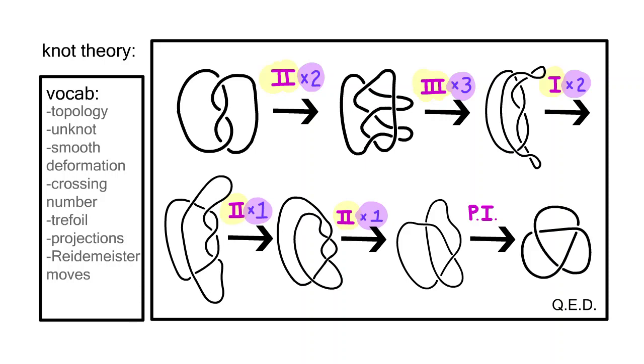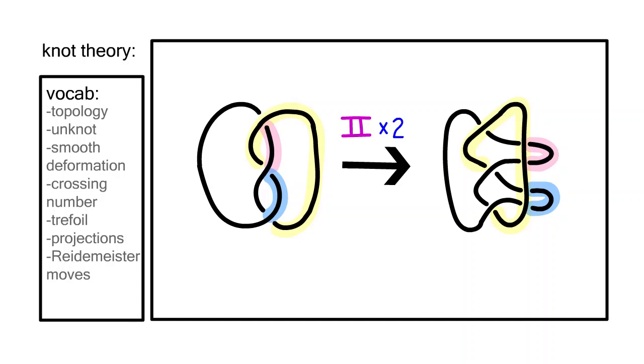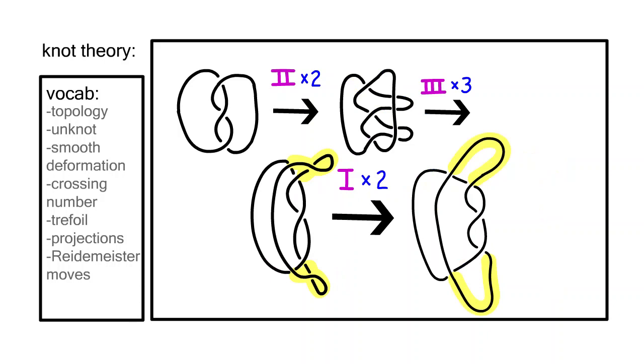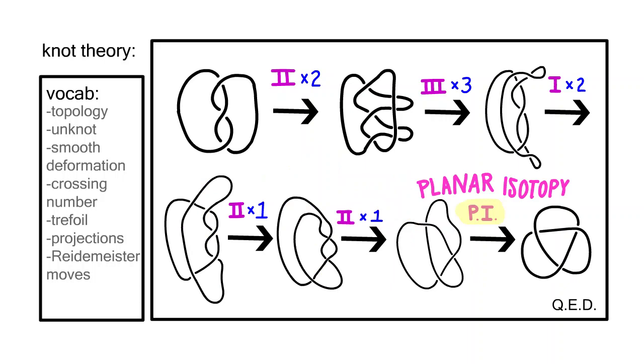We start with the mystery knot, moving the right string over with two type twos. Then we go over the crossings with three type threes, untwist the ends with two type twos, do one type one and a planar isotopy, the fancy term for a smooth deformation, and voila, the trefoil.